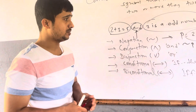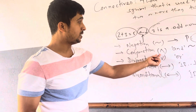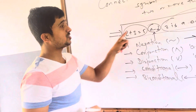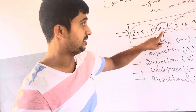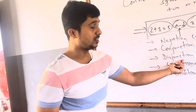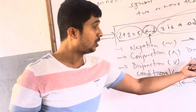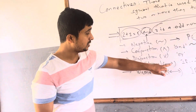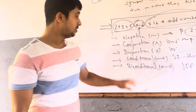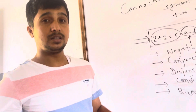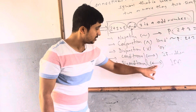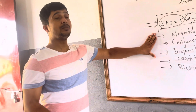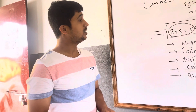Conjunction is a statement that combines two or more simple statements by 'and' or by ∧. For example, the earlier example is a conjunction. Disjunction combines statements P and Q by the word 'or' or by ∨. Conditional connects two statements by → or 'if...then'. Biconditional connects two statements by ↔ or 'if and only if'. In this class, we need to understand the meaning and then make truth tables for given statements.